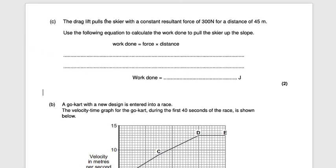Welcome to our video on exam questions related to forces. The first question states: a drag lift pulls the skier with a constant resultant force of 300 newtons for a distance of 45 meters. Use the following equation to calculate the work done to pull the skier up the slope. Work done is a form of energy measured in joules, force is in newtons, and distance is in meters.